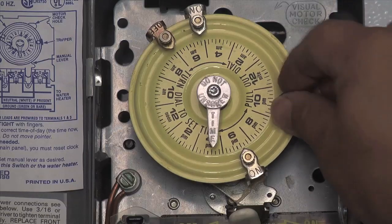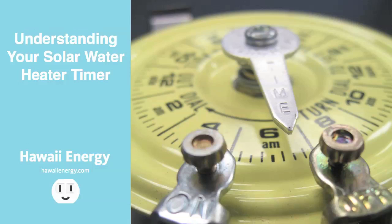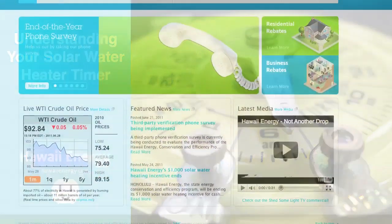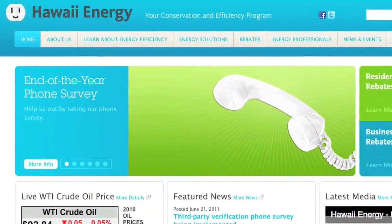By watching part one and part two of this video, we hope you have a better understanding of how your system works. And most importantly, how your timer works to save you money by minimizing the use of costly electricity to heat your water. For more information, visit our website at hawaiienergy.com.